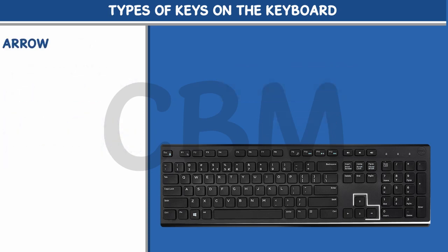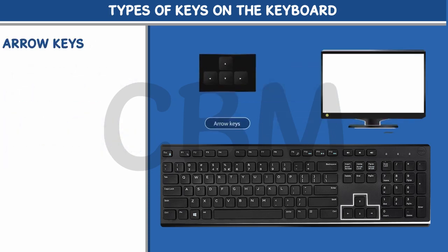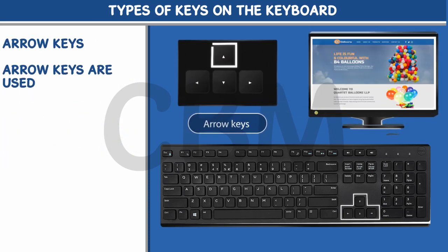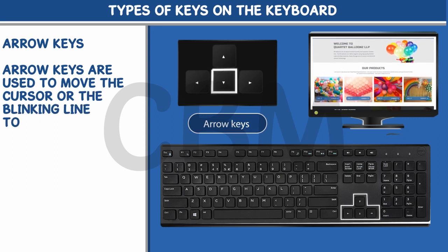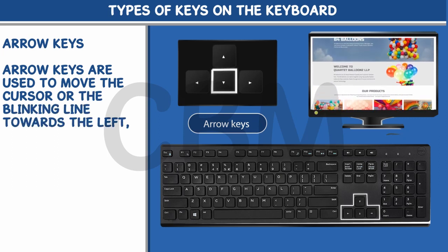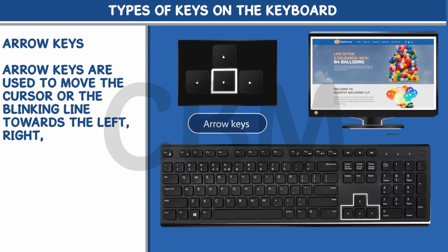Arrow Keys. Arrow Keys are used to move the cursor or the blinking line towards the left, right, up or down.